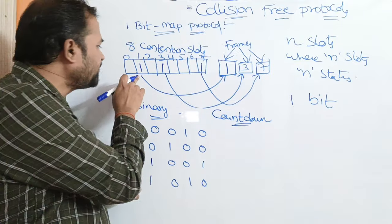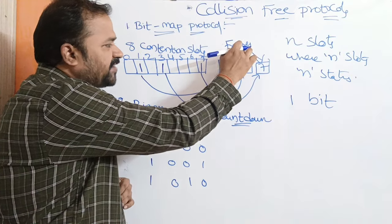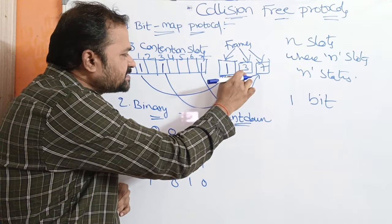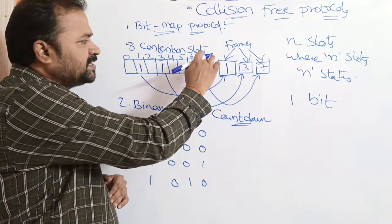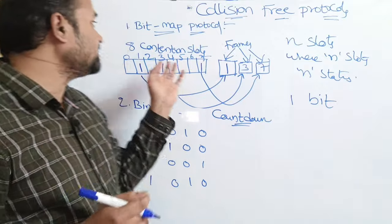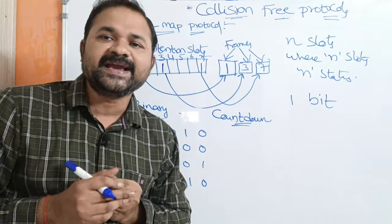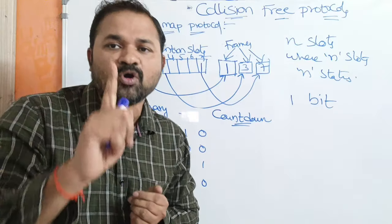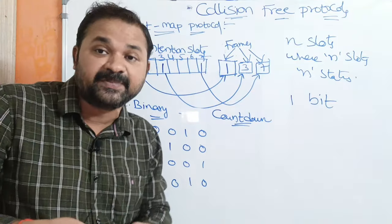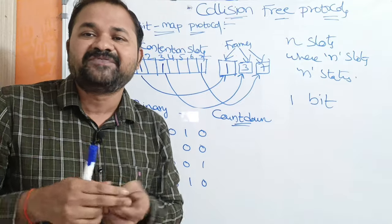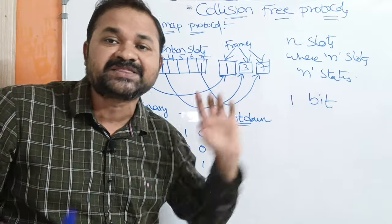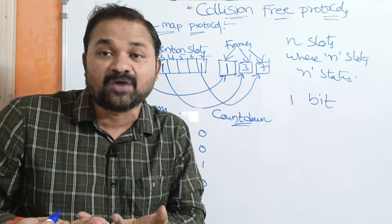Since all stations transmit frames in the agreed order, there are no collisions. First, station 1 will transmit its frame. After that, station 3 will transmit its frame. Next, the seventh station will transmit its frame. However, the major disadvantage of the bitmap protocol is that there is an overhead of 1 bit per station.